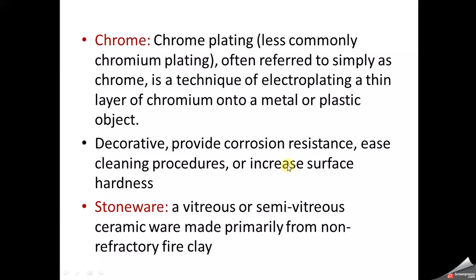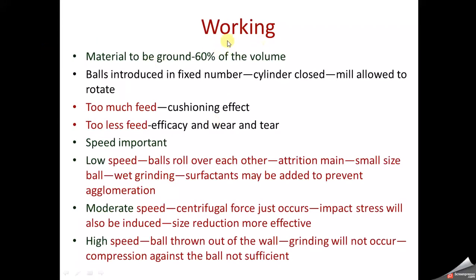In terms of how the ball mill works, the material to be ground fills up to 60 percent of the volume inside the metallic cylinder, which is mounted on a shaft rotated on the horizontal axis. The balls are introduced in a fixed number and the cylinder is closed. We use only up to 60 percent feed because if too much feed is added, a cushioning effect takes place and the attrition and impact effects are reduced. If too little feed is present, efficacy decreases and wear and tear increases.